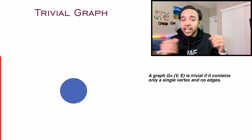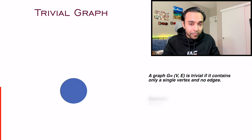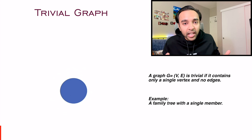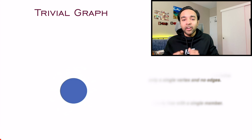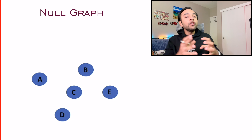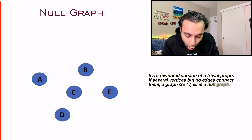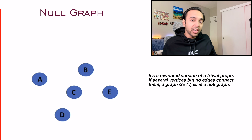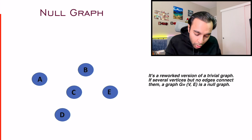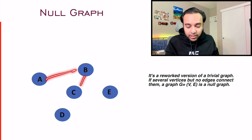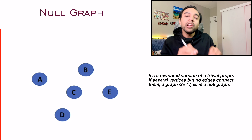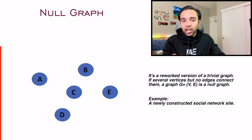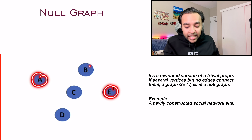The next type is called a trivial graph — a node that is just lying by itself with no neighbors, adjacent nodes, or edges connected to it. Think of it like a family tree with no children. When you have a bunch of trivial graphs where none of them are connected to each other, we call that a null graph. You have all of these individual nodes defined but there is no connection between them.